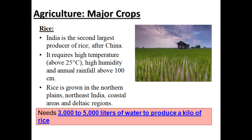India is the second largest producer of rice after China. It requires high temperature of about 25 degrees Celsius, high humidity, and annual rainfall above 100 centimeters. Rice is grown in the northern plains, northeast India, coastal areas, and deltaic regions.